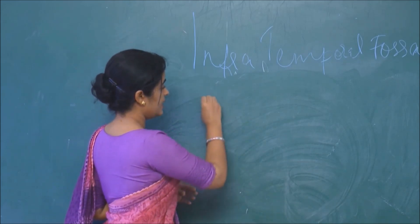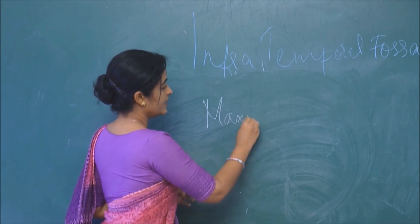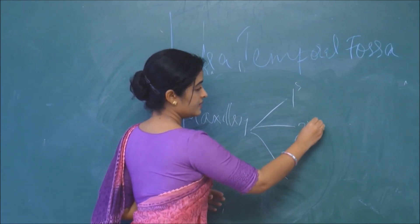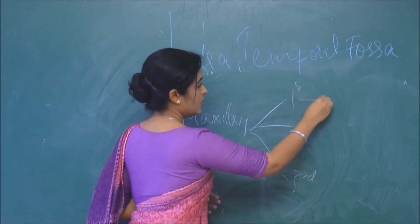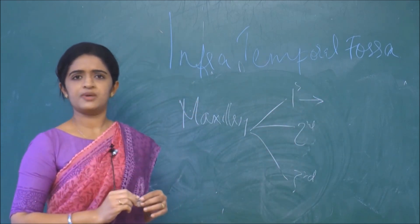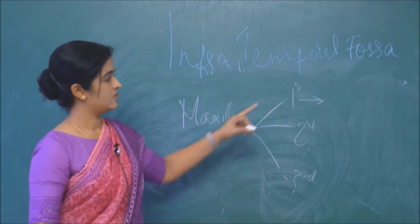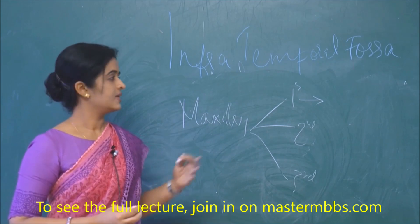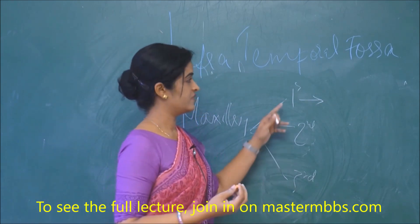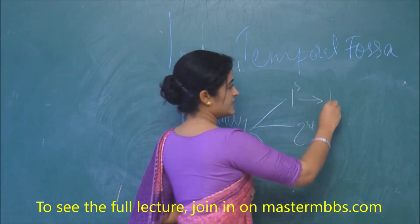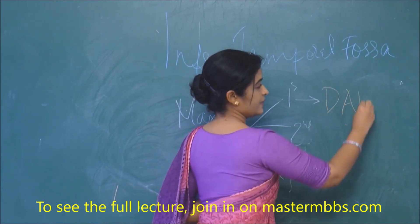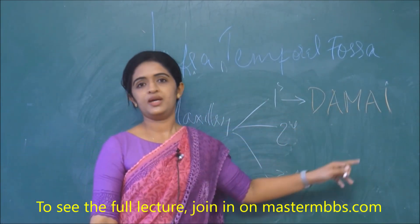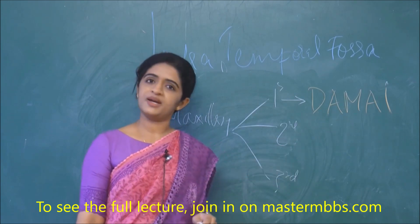So first I am going to divide the maxillary artery as having three parts — first part, second part, and third part — and I am going to mention the branches of the maxillary artery. For the first part there is an easy mnemonic, because learning anatomy is made fun with acronyms and mnemonics. For the first part we have the code DAMAI — D-A-M-A-I.